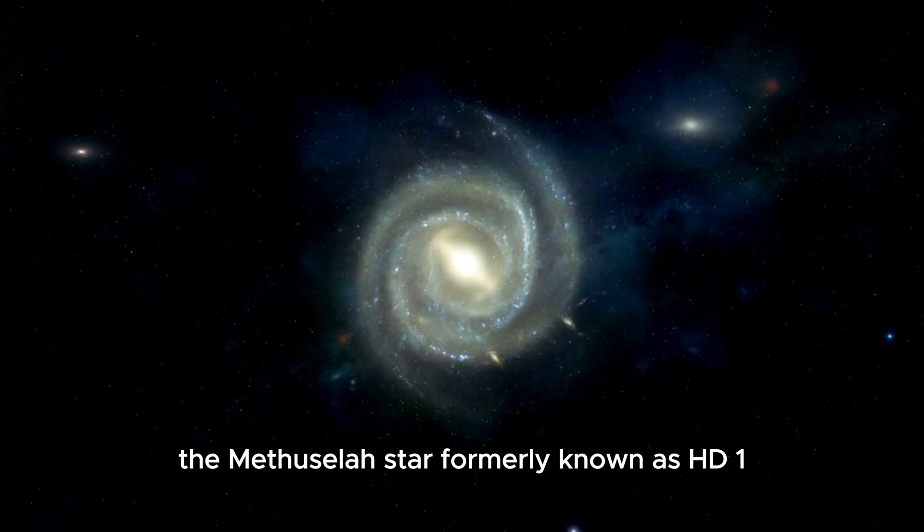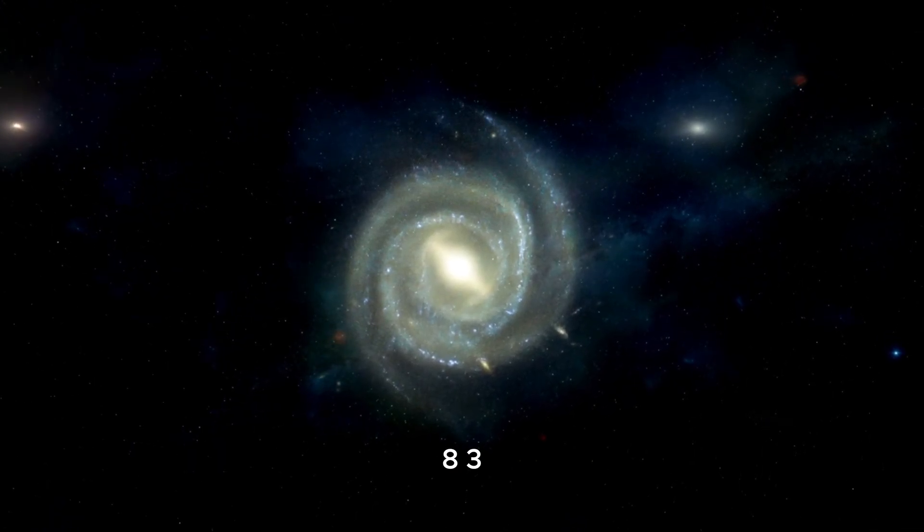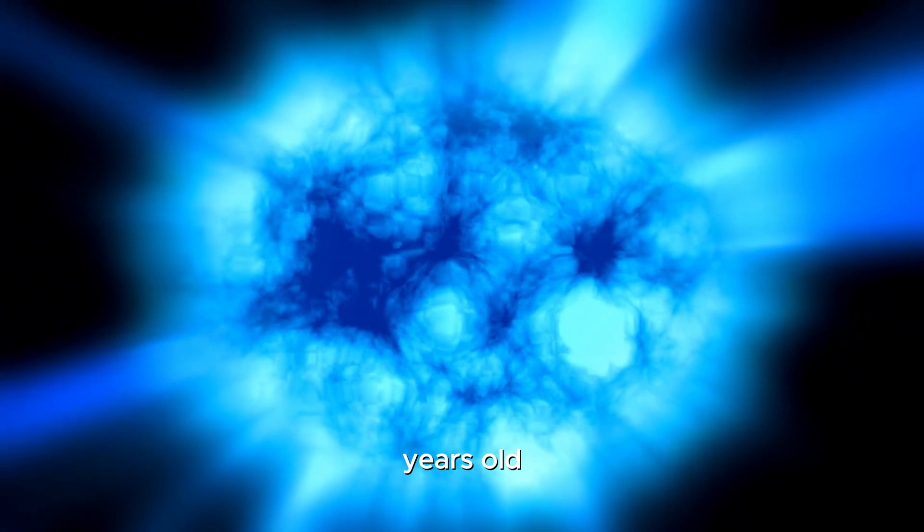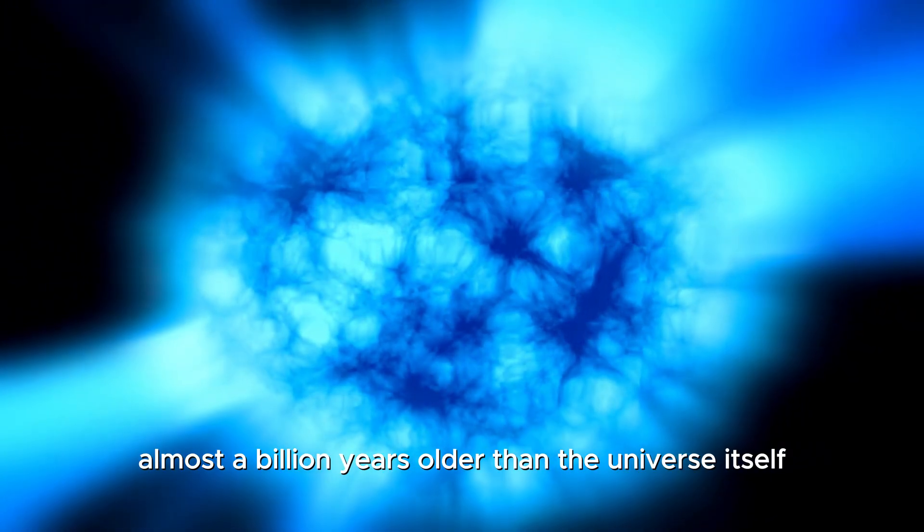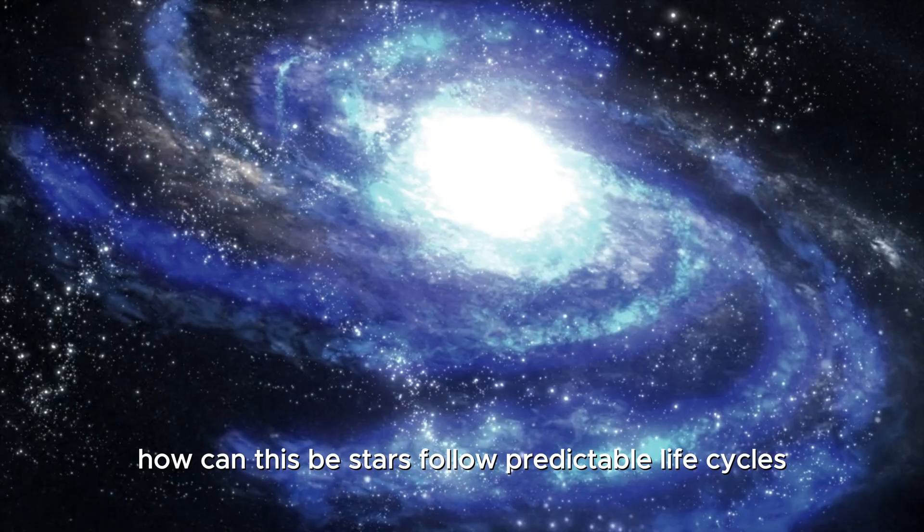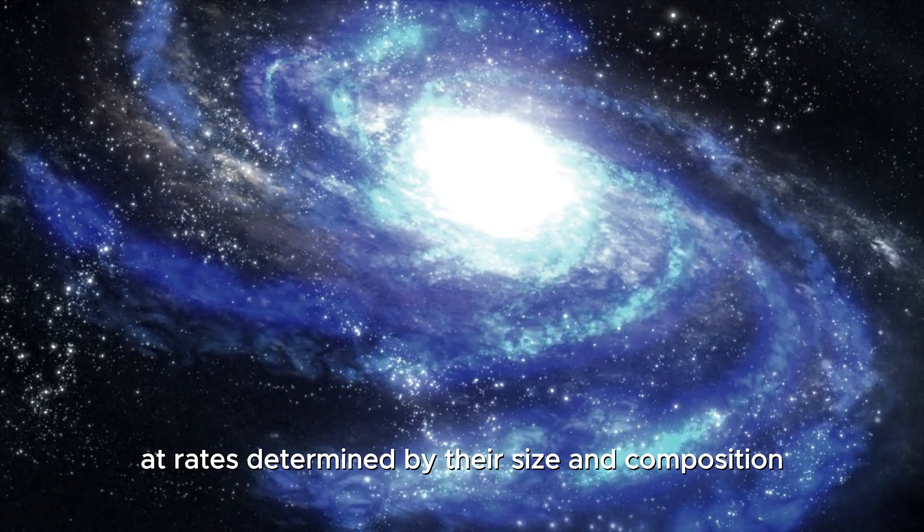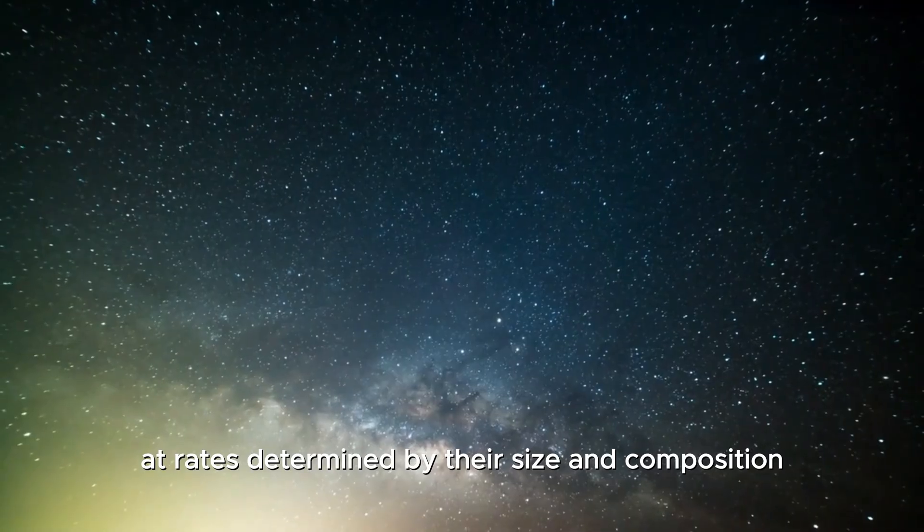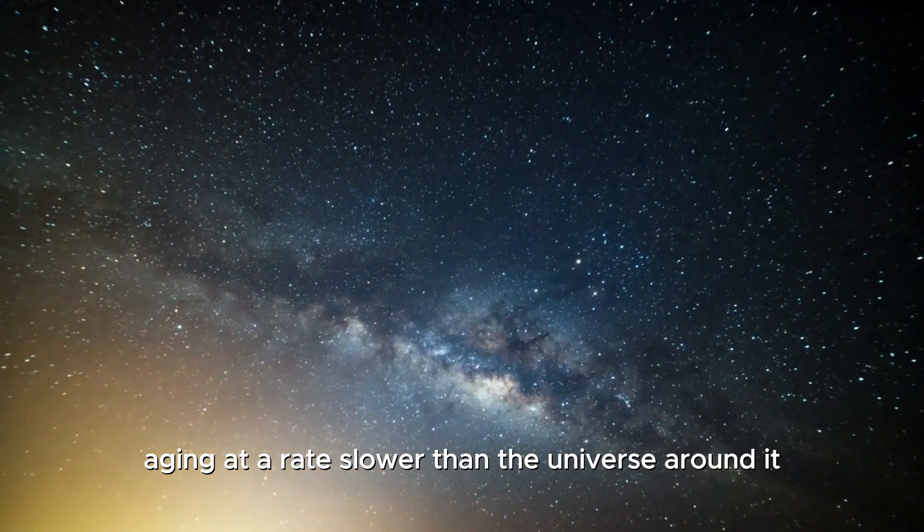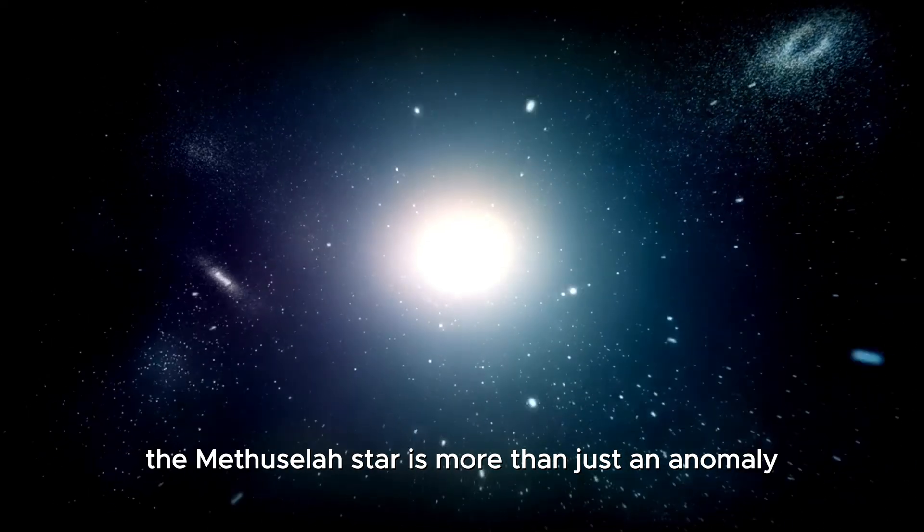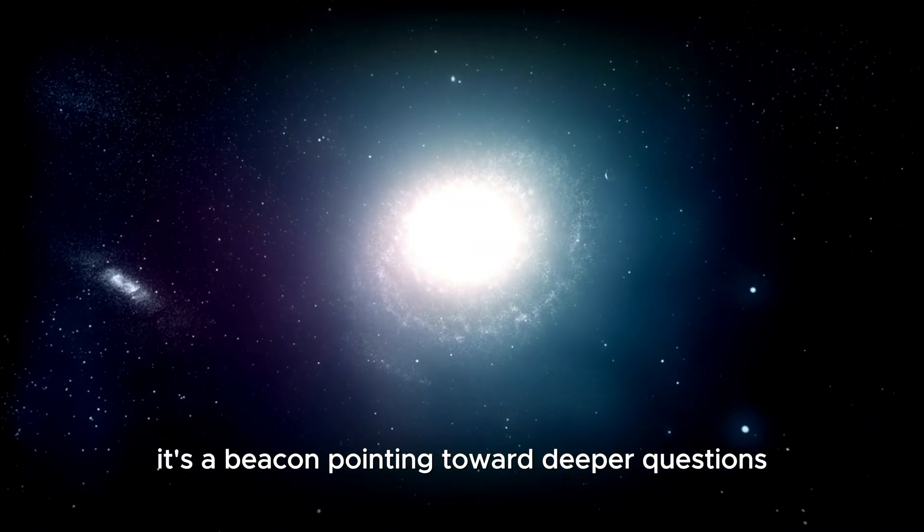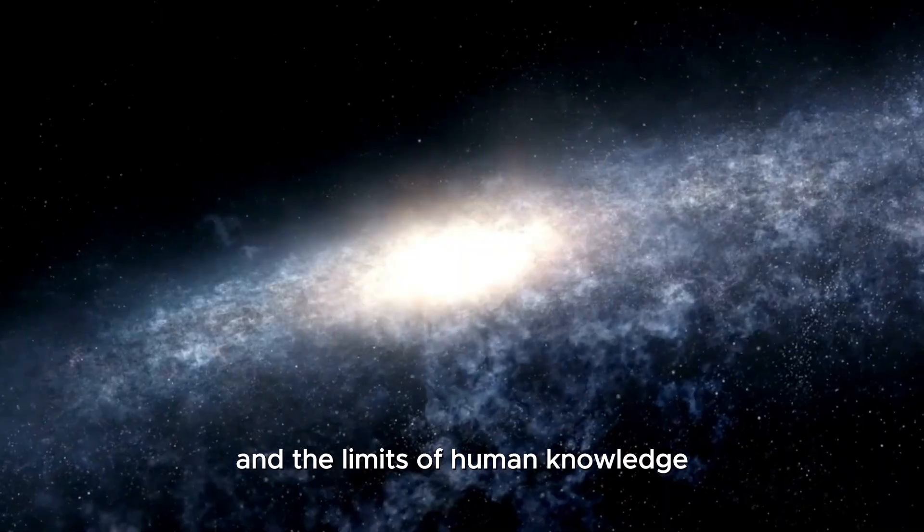Hidden within our cosmic neighborhood is one of the universe's most perplexing mysteries, the Methuselah star, formerly known as HD 14283. This ancient star is estimated to be 14.5 billion years old, almost a billion years older than the universe itself according to current models. How can this be? Stars follow predictable life cycles, burning through their fuel at rates determined by their size and composition. Yet Methuselah defies these rules, aging at a rate slower than the universe around it. The Methuselah star is more than just an anomaly. It's a beacon pointing toward deeper questions about the origins of our cosmos and the limits of human knowledge.